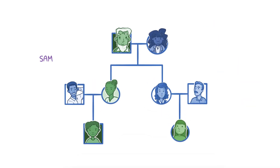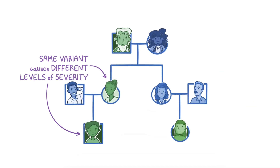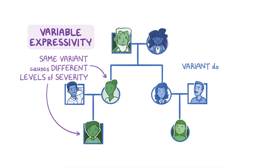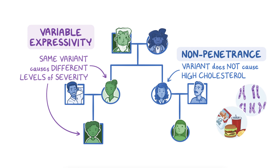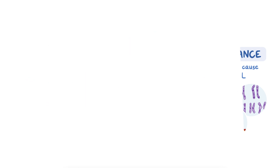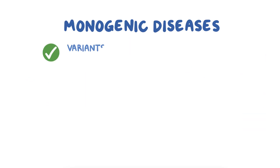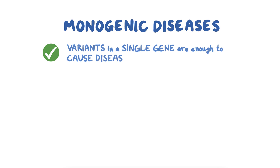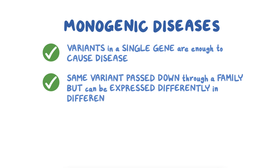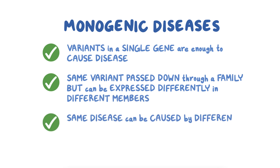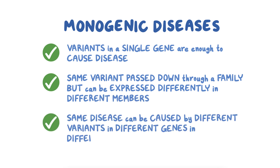But different families can have familial hypercholesterolemia caused by different variants in different genes. Among family members, the same variant can cause different levels of severity — this is called variable expressivity. And in some instances, the variant may not cause high cholesterol at all. This is called non-penetrance and may be due to the influence of other genetic factors or even differences in lifestyle or the environment. So for monogenic diseases, variants in a single gene are enough to cause disease, the same variant gets passed down through a family but can be expressed differently in different members, and the same disease can be caused by different variants in different genes in different families.